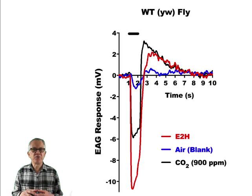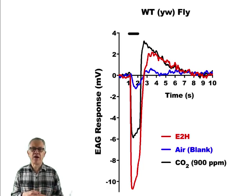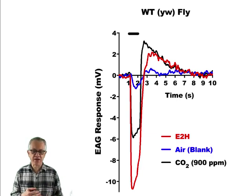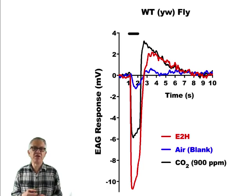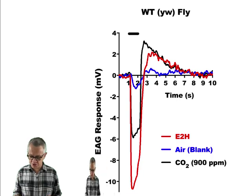When we did this experiment, we used the W1118 wild-type flies to record the EAG, but when we did the CRISPR work, the background was YW. So we repeated the same thing with YW flies — they respond in the same way. There's no difference, which was not expected, but we want to be absolutely certain that the control is the same.